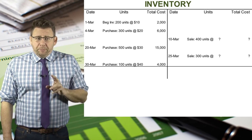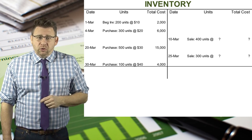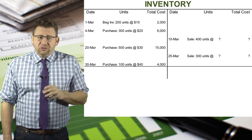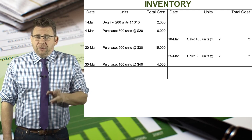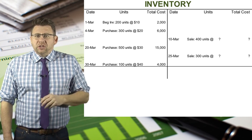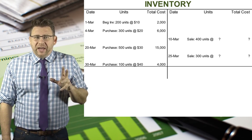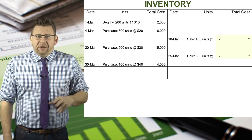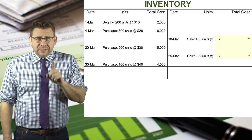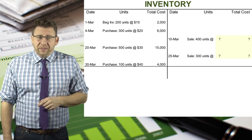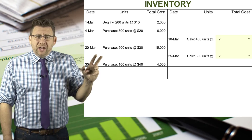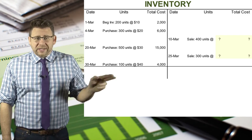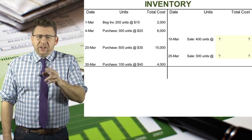Since this company uses the perpetual method of tracking inventory, the dates of the transactions matter, so we need to list them in chronological order. Additionally, the purchases and sales are recorded when they happen. I like to present the same data in a big inventory T account. In fact, everything listed here isn't dependent on the valuation method — the items that are dependent are the ones highlighted on the credit side of the account.